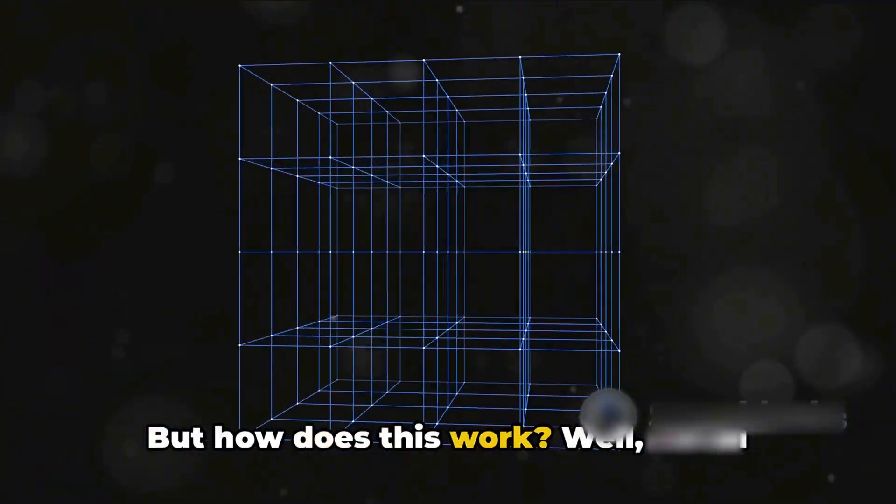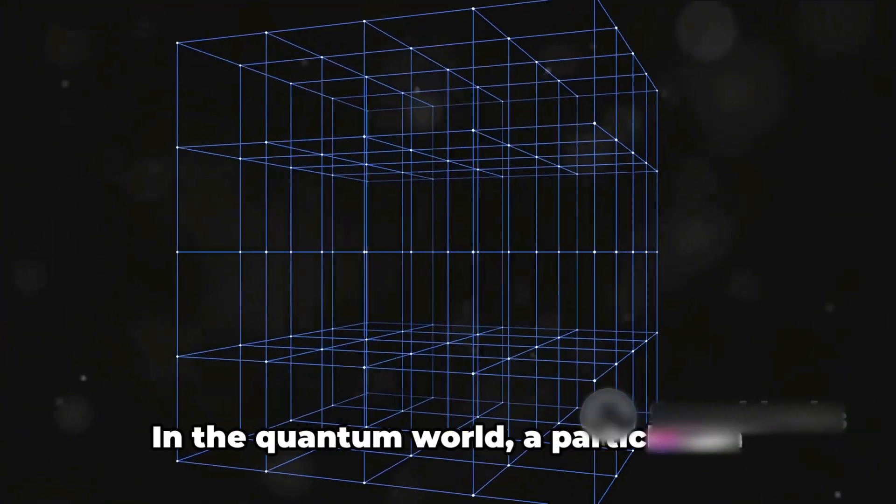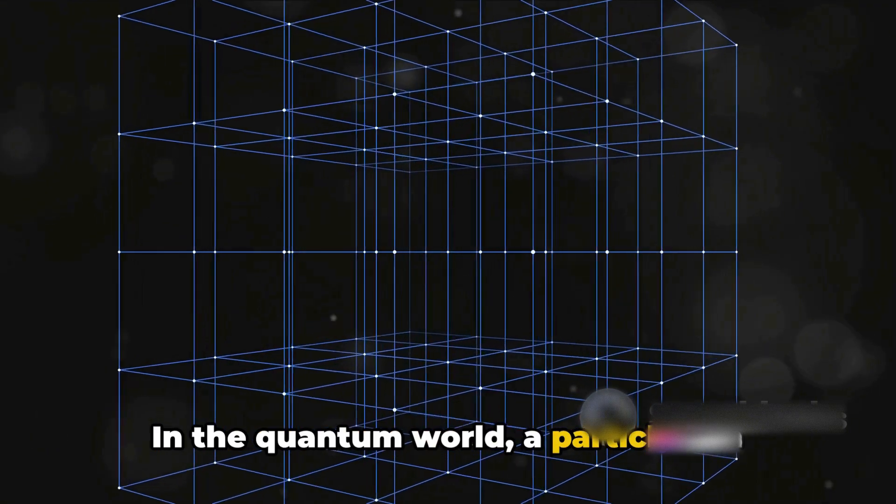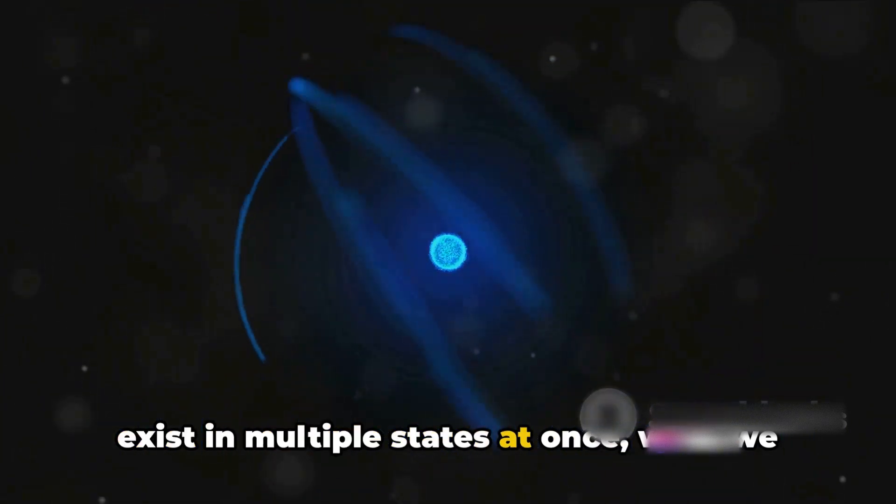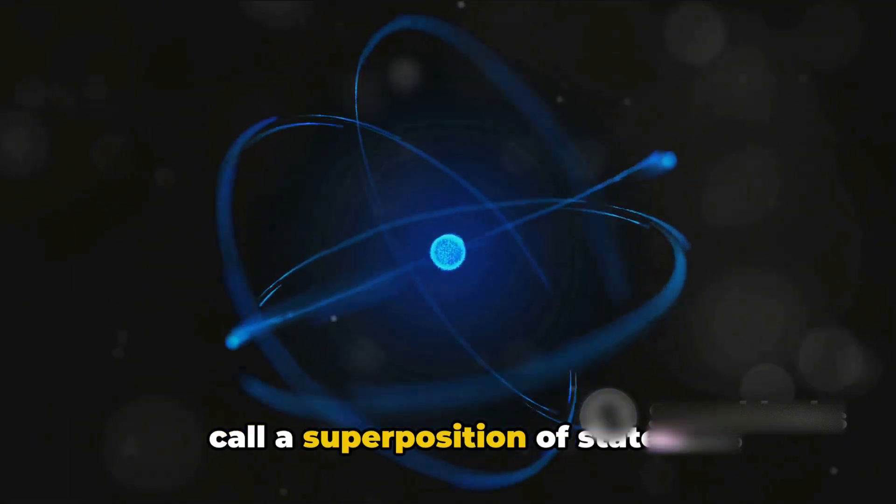But how does this work? Well, it's all about superposition. In the quantum world, a particle can exist in multiple states at once, what we call a superposition of states.